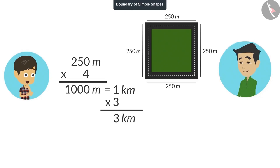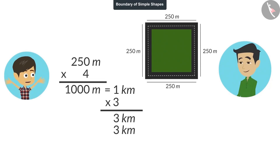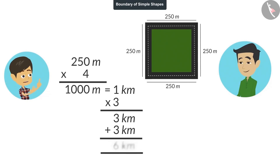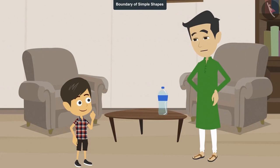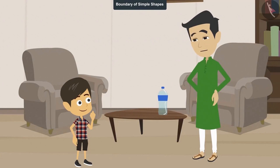Oh, now I get it. You walk 3 kilometers in the morning and 3 kilometers in the evening. This way, you walk 6 kilometers every day. Yes, Reyanj, that is what I do.